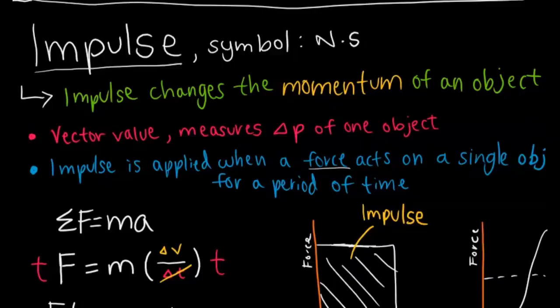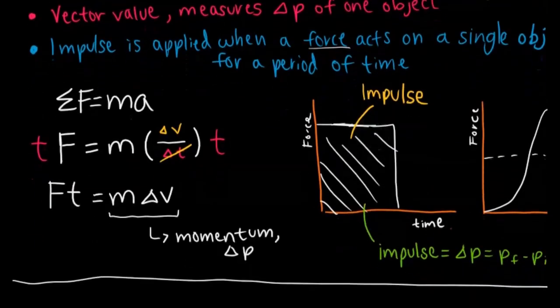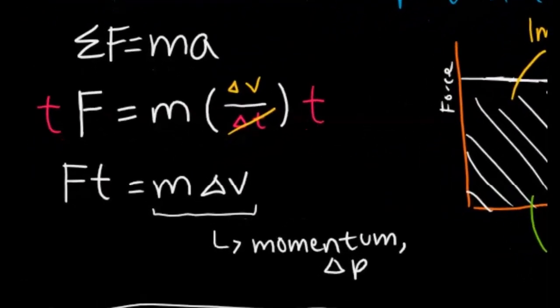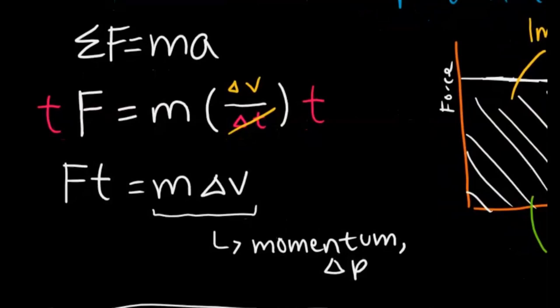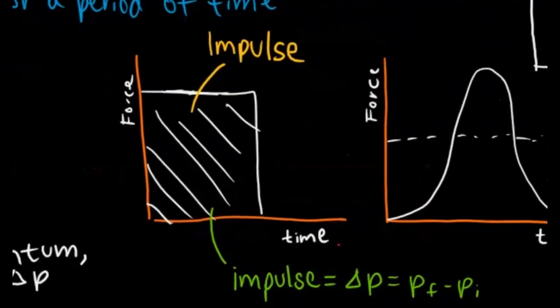The second big idea is impulse. Impulse is what changes the momentum of the object, denoted in units of newtons times seconds. Impulse is a vector value, and you can derive it from Newton's second law. Acceleration can also be expressed as change in velocity over change in time, and therefore we can multiply time on both sides to get F times t equals m times change in V.